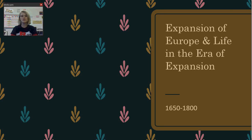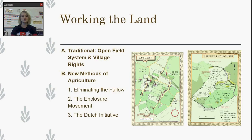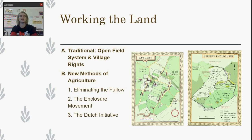Hey guys, so today we're going to be looking at some of the highlights of chapters 17 and 18, which is basically the era of expansion in Europe and what life was like for people living in this time. We're going to start by looking at the rural areas and how people really farmed and worked the land.